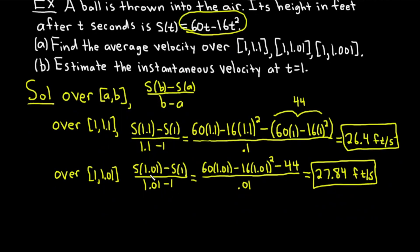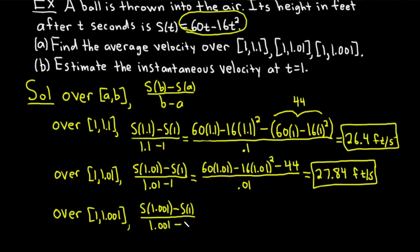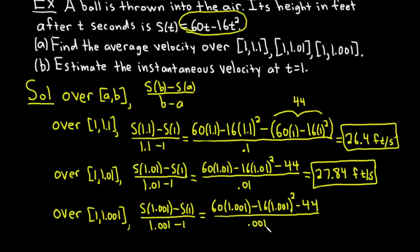The last interval is [1, 1.001]. We have [S(1.001) − S(1)] / (1.001 − 1). Plugging in 1.001: 60(1.001) − 16(1.001)² − 44, all over 0.001. These problems with numbers always take a little longer — you just have to be careful. Putting this in your calculator, you should get 27.984 feet per second.